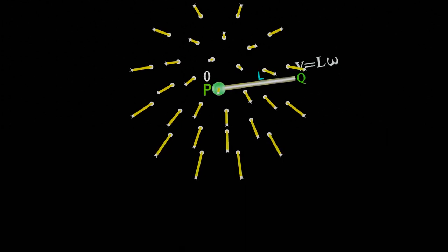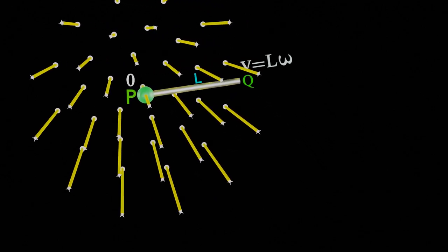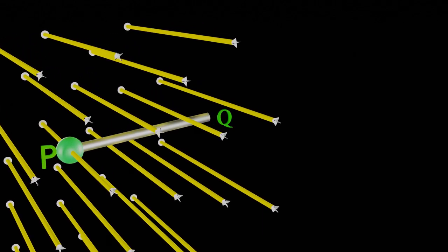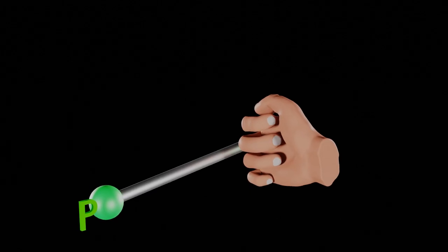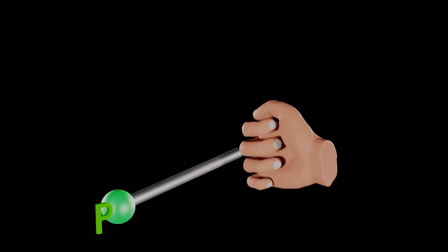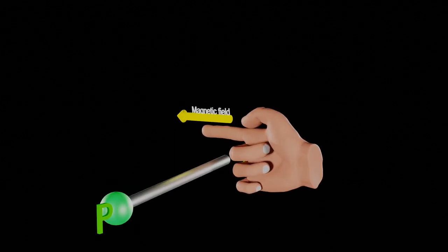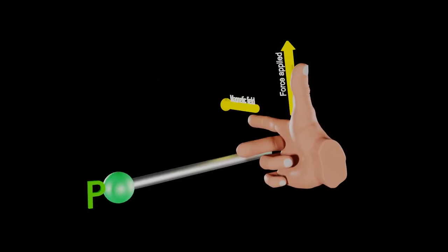Now, if there is an EMF induced, then there should have to be some polarity of the EMF induced. To find that polarity of EMF induced, let's use right-hand Fleming's rule, in which forefinger is placed along the direction of magnetic field, thumb points in the direction of force applied, then the middle finger will give us the direction of current induced.